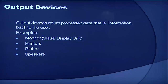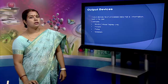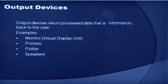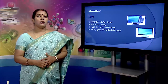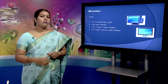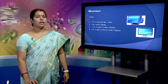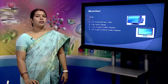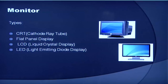Now let us see the output devices. An output device returns processed data, that is information, back to the user. Some of the commonly used output devices are monitor, printers, plotter and speakers. The monitor is the most common output device being used. People interact with this device more intensively than any other device. Computer information is displayed visually with a video adapter card and monitor. Information processed within the CPU that needs to be visualized is sent to the video adapter, which converts the information for display in the same manner as a television.